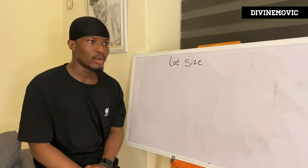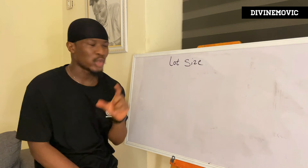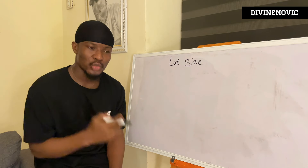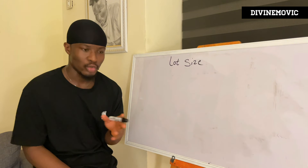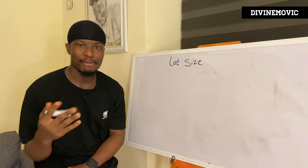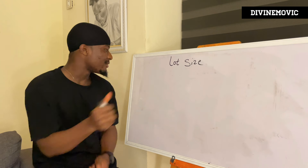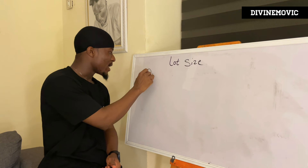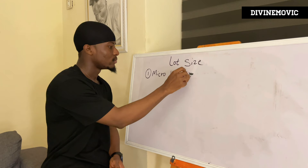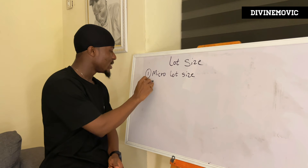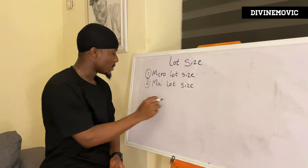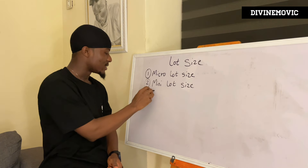Risk management is simply what tells you what lot size you should use. And lot size is basically what tells you how much you're going to move, or how much you're going to lose. For you to understand lot size, you simply need to understand the three types of lot size: we'll have micro lot size, we'll have mini lot size, and we'll have standard lot size.